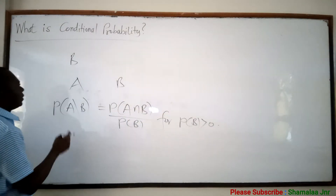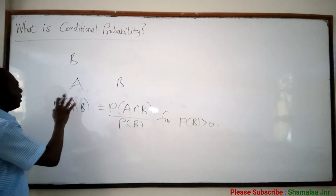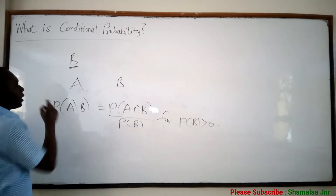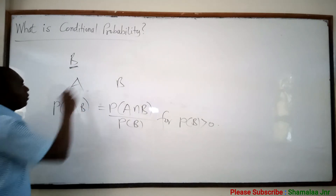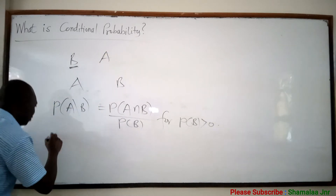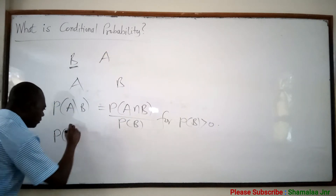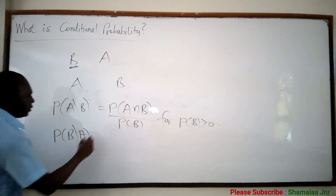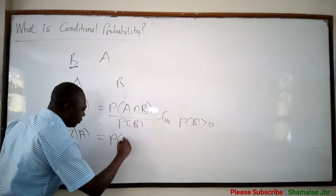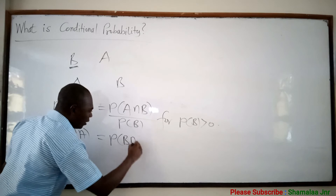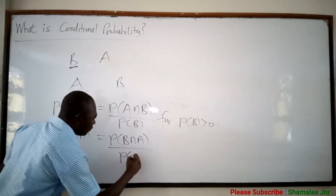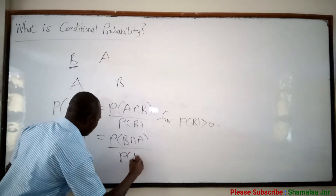Similarly, the conditional probability of event B given an event A, which is denoted as P(B|A), is equal to probability of B and A over probability of A.